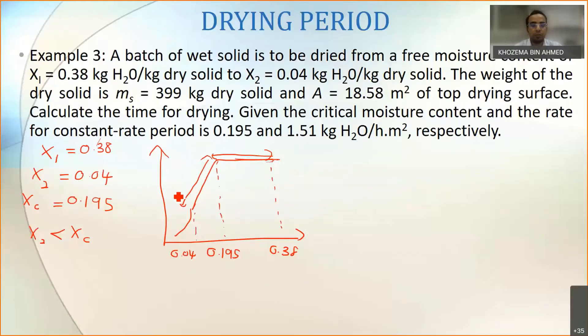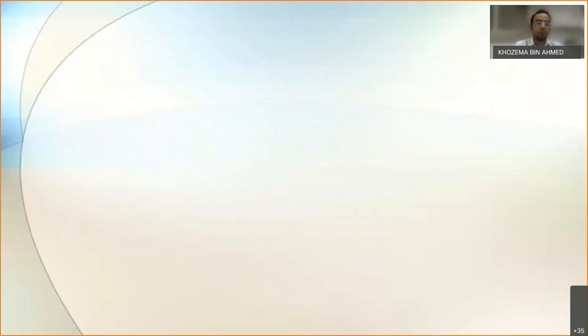This is clearly the question where we can use the combination of both equations. You have two options: either find the value of the constant rate drying and the falling rate drying separately, or combine it. The easiest way is to combine it because you don't have to waste a lot of time. So the equation will be t total, meaning t for the constant rate drying plus the falling rate drying.